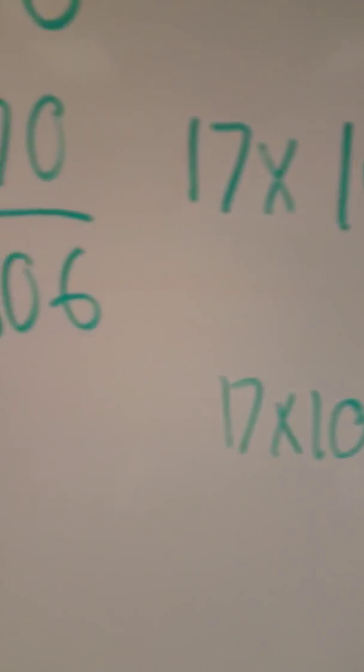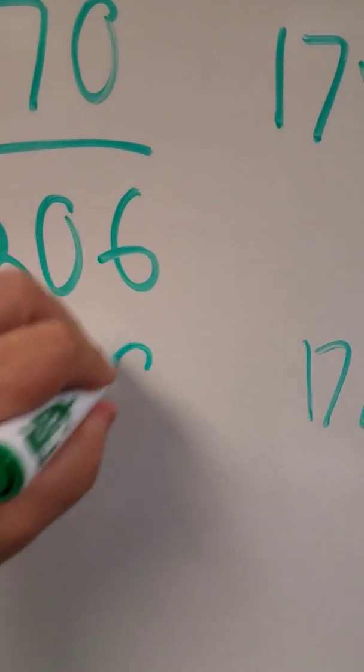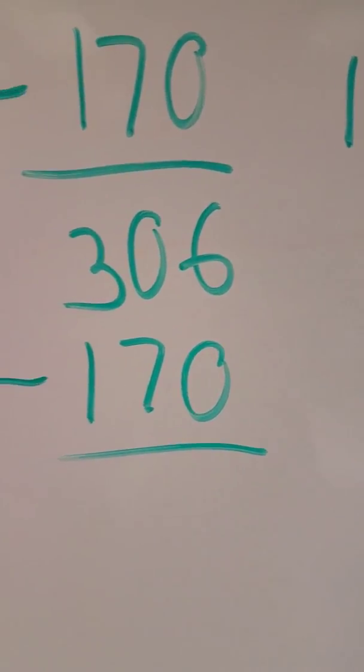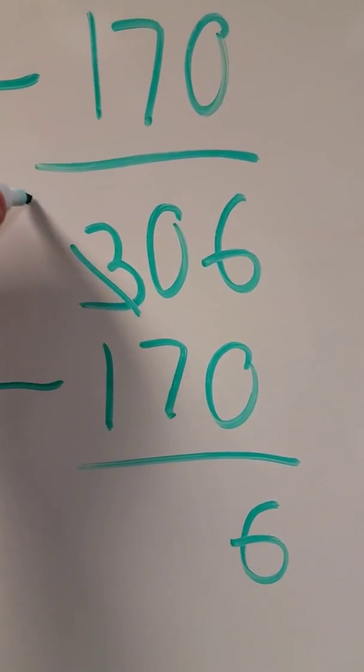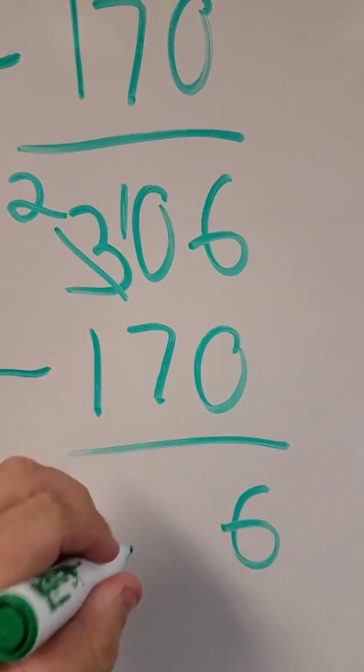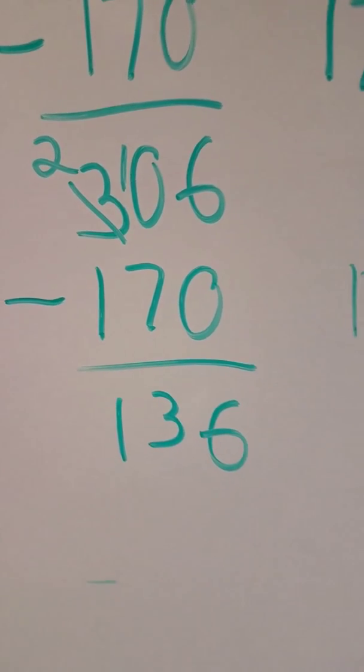And I'm going to go back over here and say, well, okay, let's take 170 away from what I just previously did. 6 minus 0 is 6. Can't take 7 away from 0. So I have to regroup. 10 minus 7 is 3. And 2 minus 1 is 1.